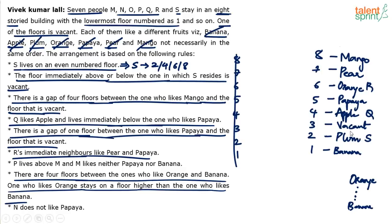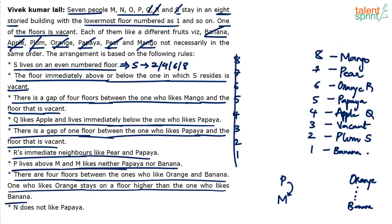Arranging the persons: S, Q, and R are already placed. P lives above M, and M likes neither papaya nor banana. M cannot go on the banana floor or the papaya floor. So M goes to floor 7 — the pear floor — and P goes to floor 8, liking mango. That places M on floor 7 and P on floor 8.